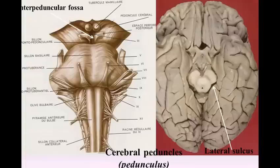The cerebral peduncles (pedunculus cerebri, crura cerebri) are two cylindrical masses situated at the base of the brain and largely hidden by the temporal lobes of the cerebrum, which must be drawn aside or removed in order to expose them. They emerge from the upper surface of the pons, one on either side of the middle line, and divergent as they pass upward and forward, disappear into the substance of the cerebral hemispheres.